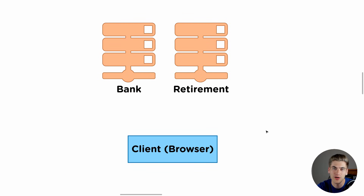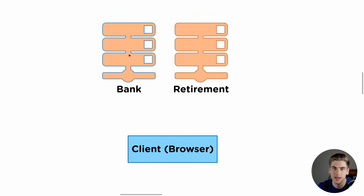Now that we've talked about how JWT works and what it is, let's finally talk about why you would want to use JWT, and look at a very common use case. Here we have two different servers. We have a bank that owns a server running all their banking applications, and they also own a separate server that takes care of all their retirement plans. They want users that log into the bank to also be automatically logged into the retirement account, so when switching from the bank to the retirement server, the user doesn't have to re-log back in.